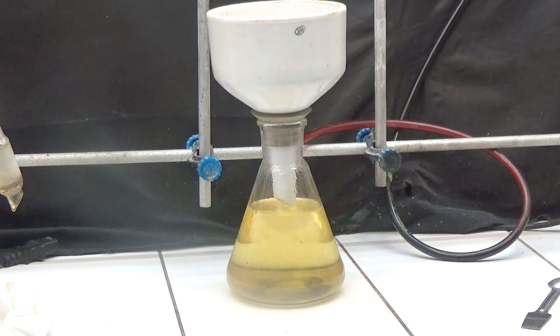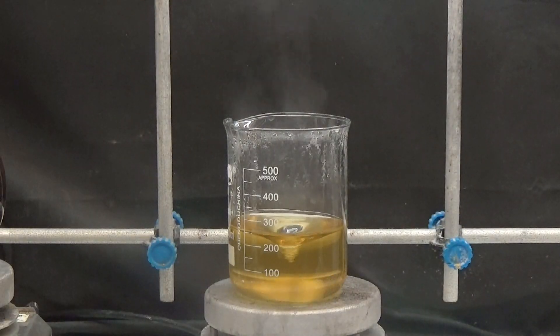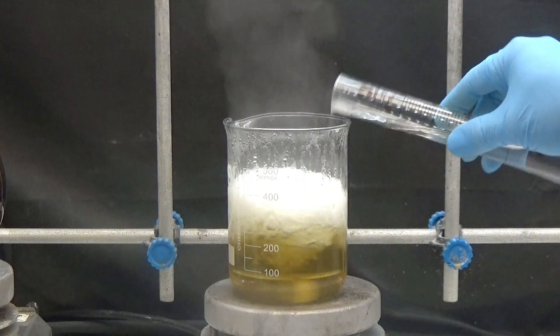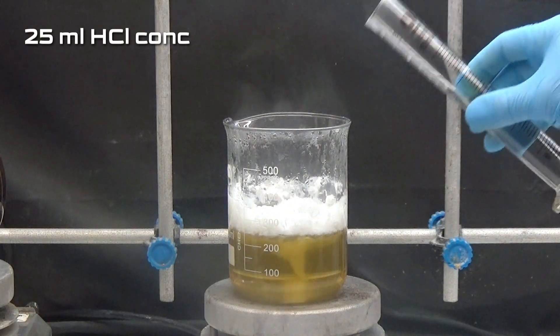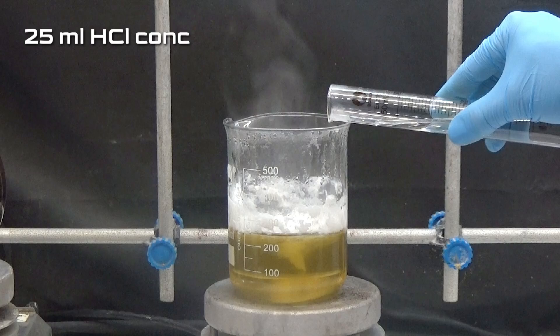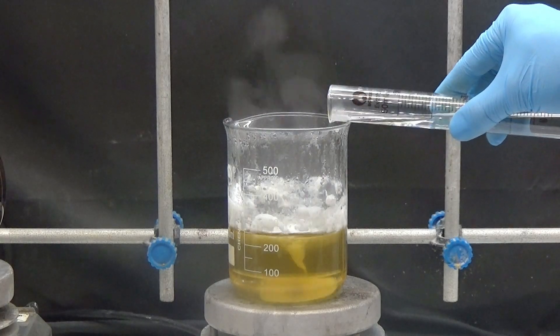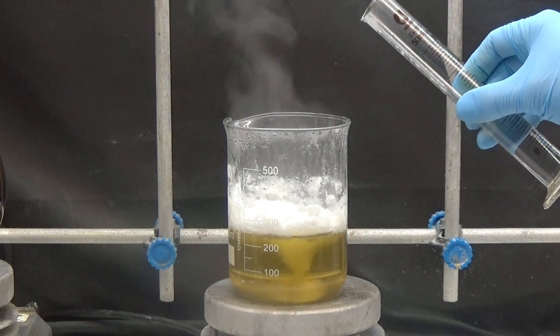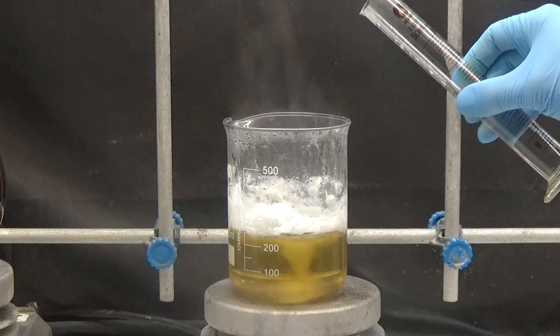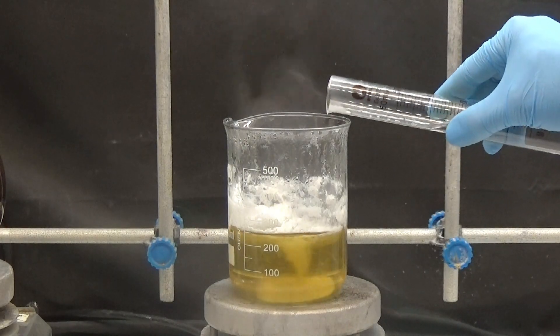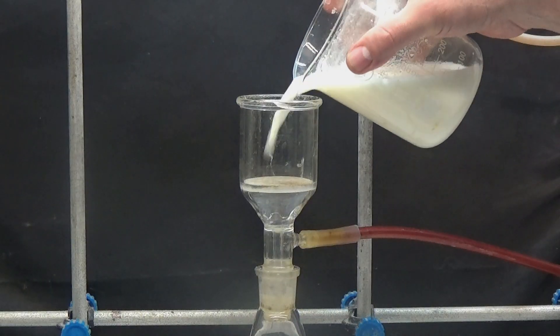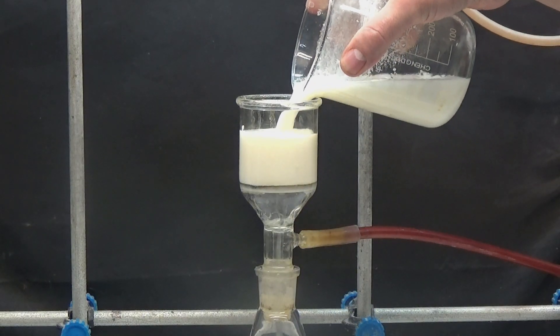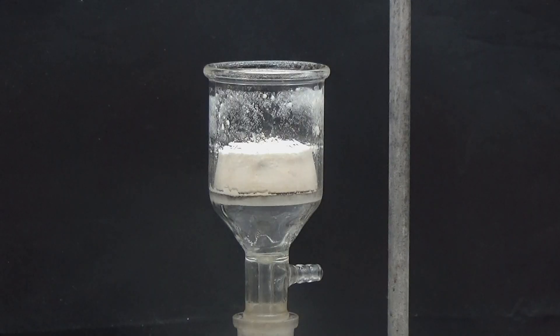Evaporate the filtered liquid to a volume of 250 milliliters. Without cooling, slowly add 25 milliliters of concentrated hydrochloric acid. A white and voluminous precipitate of orthochlorobenzoic acid is appreciated. Allow to stand for about two hours and collect the acid by suction. Wash the acid twice with 50 milliliters of cold water.